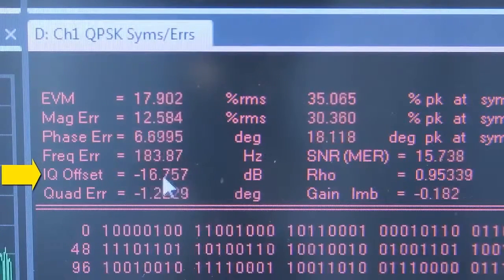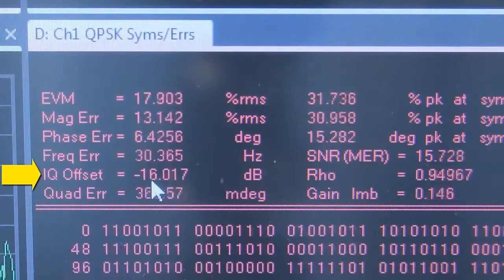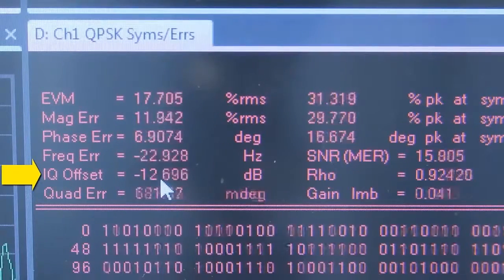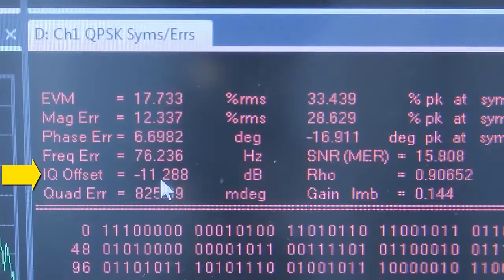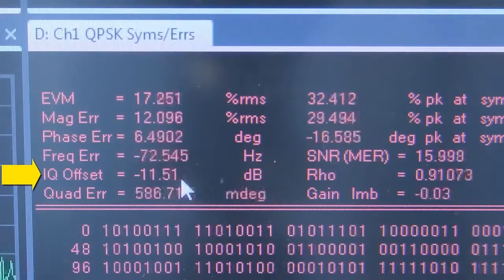So do you see how the IQ offset is changing from minus 20 to minus 14, minus 12, minus 10 while I am increasing the DC offset.